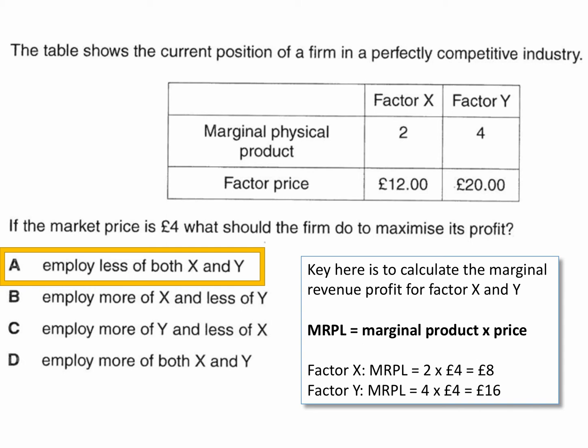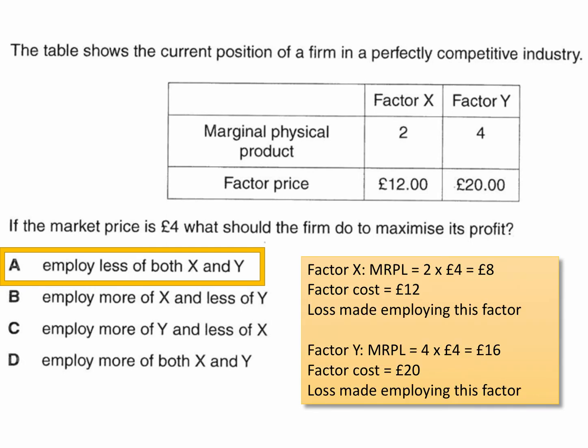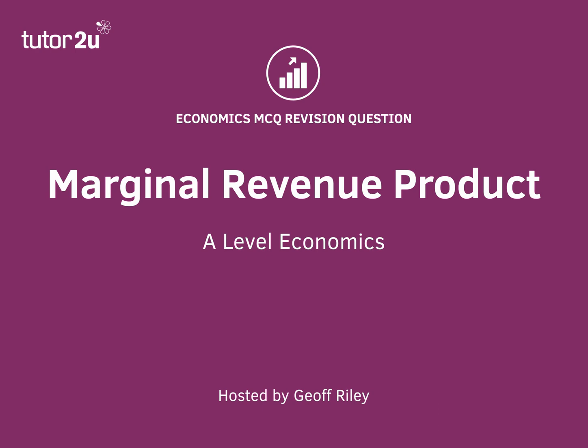So Factor X gives us £8 of marginal revenue product, and Factor Y gives us £16. However, Factor X costs £12 to employ, so you make a loss employing that factor. And Factor Y costs £20 to employ — well, £16 is less than £20, so you make a loss employing that factor as well. Because the marginal revenue product of each factor is less than the marginal cost of employing them, a profit-maximising firm should employ less of both X and Y. That's the answer to this particular question.